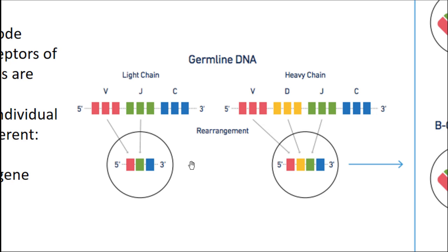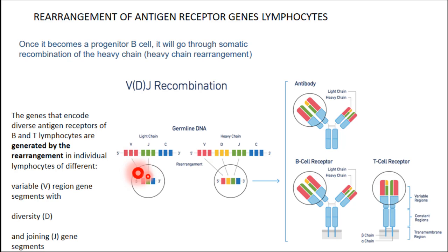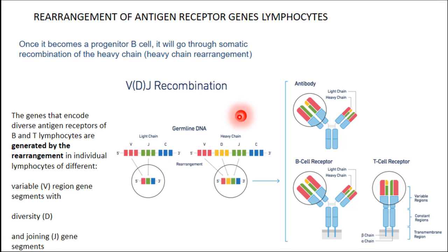There are other regions called V, D, and J: V stands for variable region, D stands for diversity, and J stands for joining. Notice that a light chain does have V and J but is missing the D segment of the variable region. Those three — V, D, J — make the variable region of the heavy chain. Those two — V and J — make the variable region of the light chain. And the constant regions of the heavy and the light chain will be translated from the C segments.